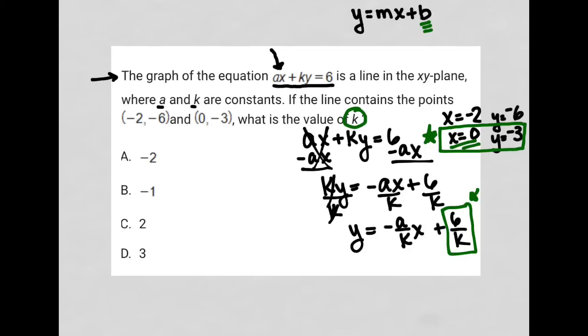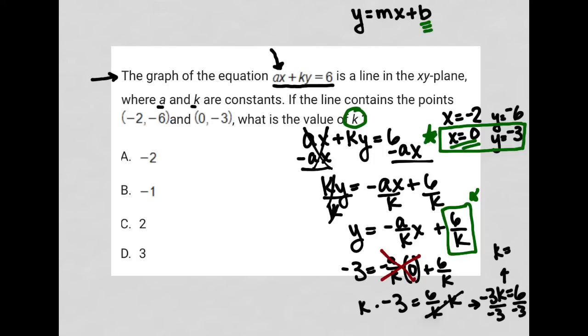Using that second ordered pair, Y is equal to negative 3, X is equal to 0, and we still have our 6 over K. And as expected, this entire term here is now just 0, which means all I have left is negative 3 equals 6 over K. I can multiply both sides of the equation by K to have negative 3K equals positive 6, and then I can divide both sides by negative 3 to end up with K is equal to 6 divided by negative 3, which is negative 2. So our answer here is negative 2, and therefore it is choice A.